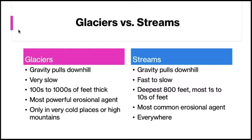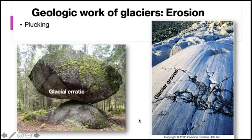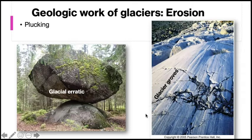Glaciers are only found in cold places, while streams can be found almost anywhere on the planet. Glaciers are the most powerful erosional agents because of their tremendous weight. Proof of their erosional power can be found in the form of glacial erratics — car-sized boulders that glaciers have plucked or ripped away from the bedrock over which they once flowed and were deposited when the glacial ice melted. As a glacier flows downhill, it accumulates progressively more rock fragments, which in turn do abrasion to the bedrock over which the glacier is sliding, leaving behind distinctive glacial grooves.